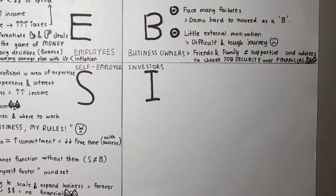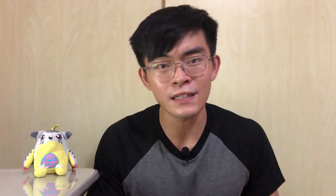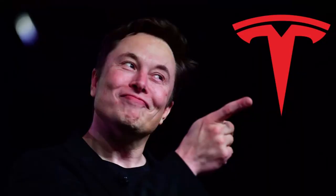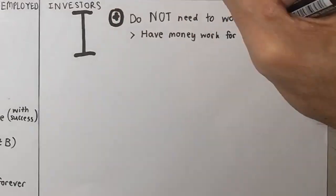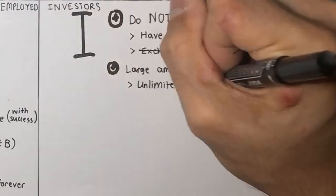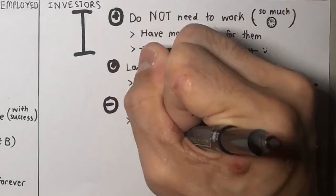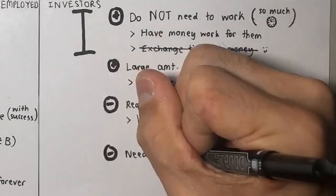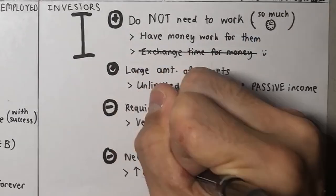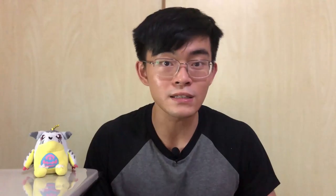Now let's move on to I's, who are investors that search for B's to invest in to grow their money. Kiyosaki recommends being a B before an I so that we know how companies work and which ones to invest in. I's usually do not work at all as they have their money work for them. However, in order to be just an I, one needs a huge amount of initial capital to gain constant monthly passive income. An I also takes an extremely long time to develop as they require a lot of education and experience to acquire assets across many different markets.